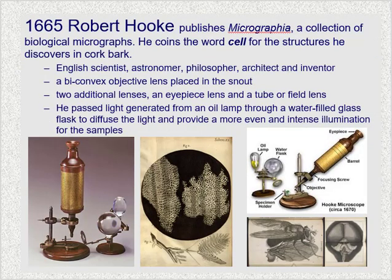After the discovery of the microscope in 1609, it gained popularity among scientists and they began to modify the microscope that Galileo created. Around 1665, an English scientist named Robert Hooke developed his version of the microscope, which had a biconvex objective lens placed in the snout, two additional lenses — an eyepiece lens and a tube or field lens. His images came out quite dark, so he passed light from an oil lamp through a water-filled glass flask, which diffused the light and provided more intense illumination of the sample.